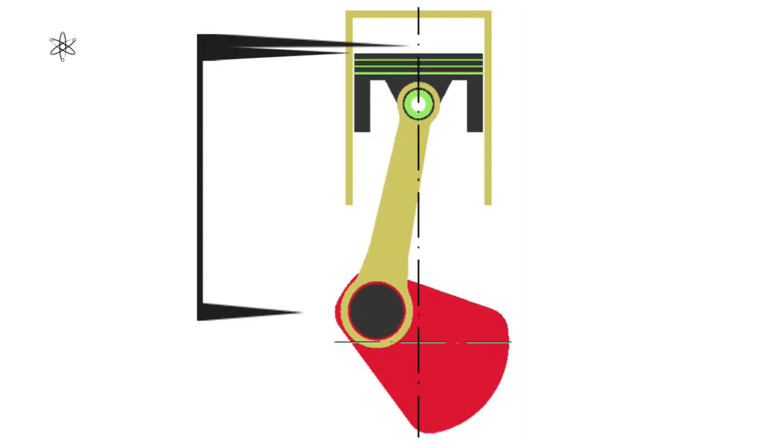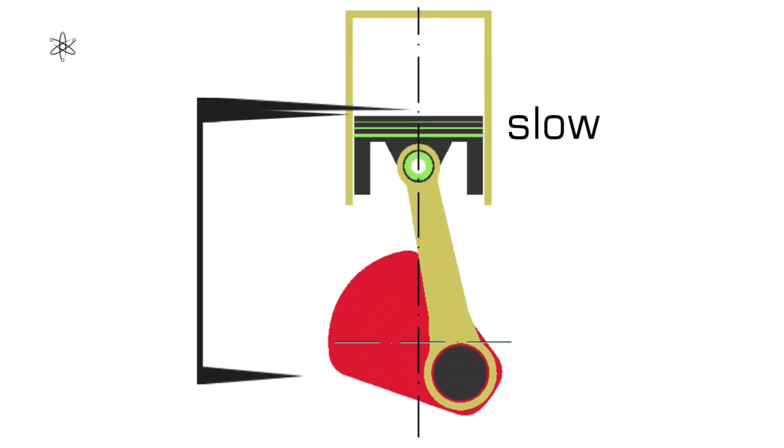On one part of the crankshaft throw, the piston is traveling slower, and on the other part of the crankshaft throw, the piston is traveling faster.